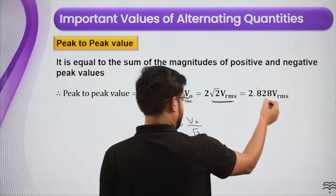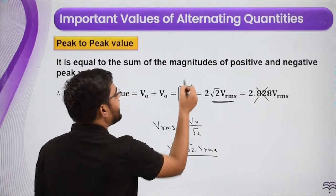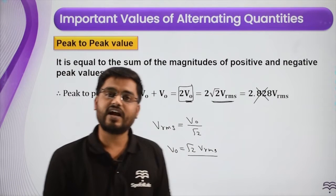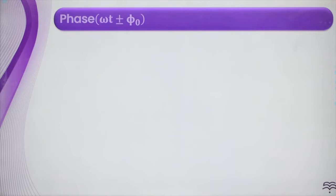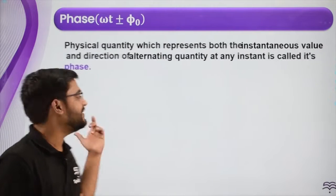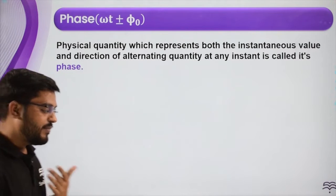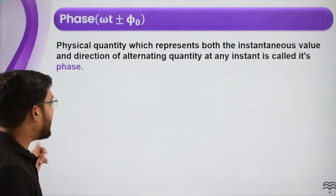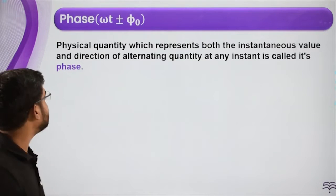This formula need not be memorized. Just remember that if they give us the peak-to-peak value, then half of that gives us the peak value. Next is phase. Phase is basically the angle omega·t plus or minus φ.